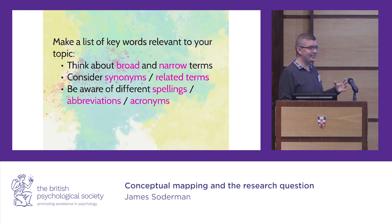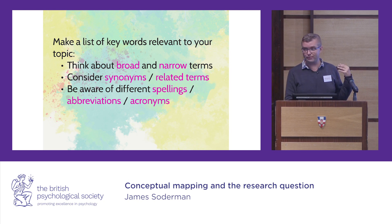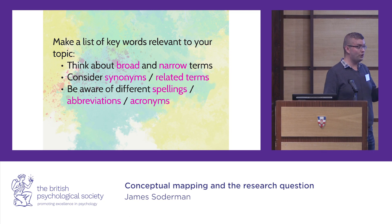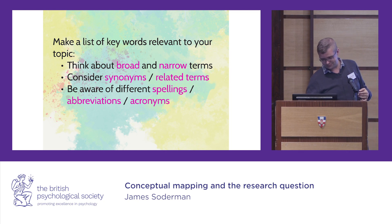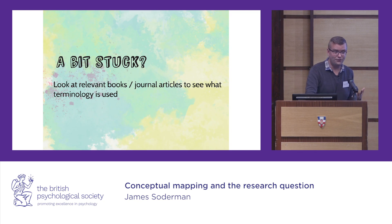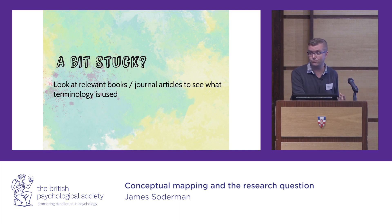What you want to do — and this is what the other side of the sheet is for — is to think about your topic and consider the broader and narrower terms. Think about synonyms and related terms, spellings, abbreviations, and acronyms — anything useful for researching the topic. Breaking it down that way gives you lots of keywords. If you get stuck, have a look at books, journals, or anything discussing that topic. Wikipedia can also be good for finding terminology to use in your searches.